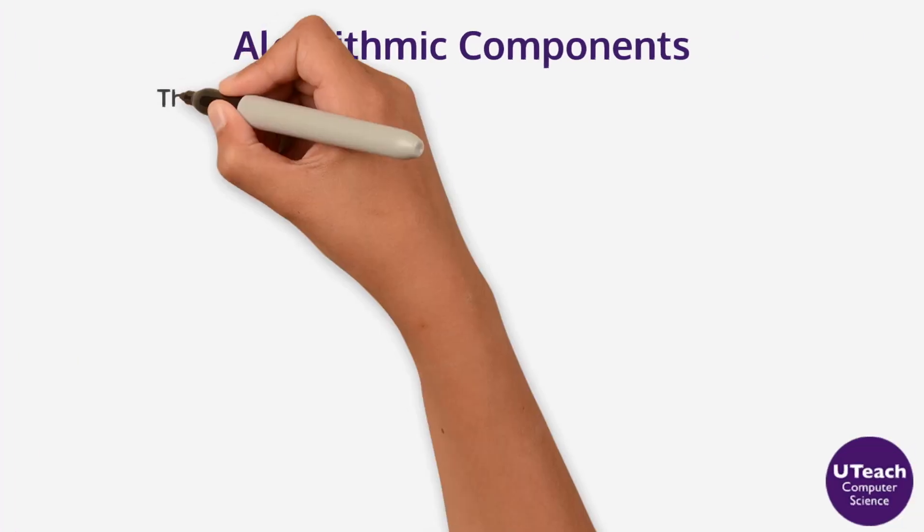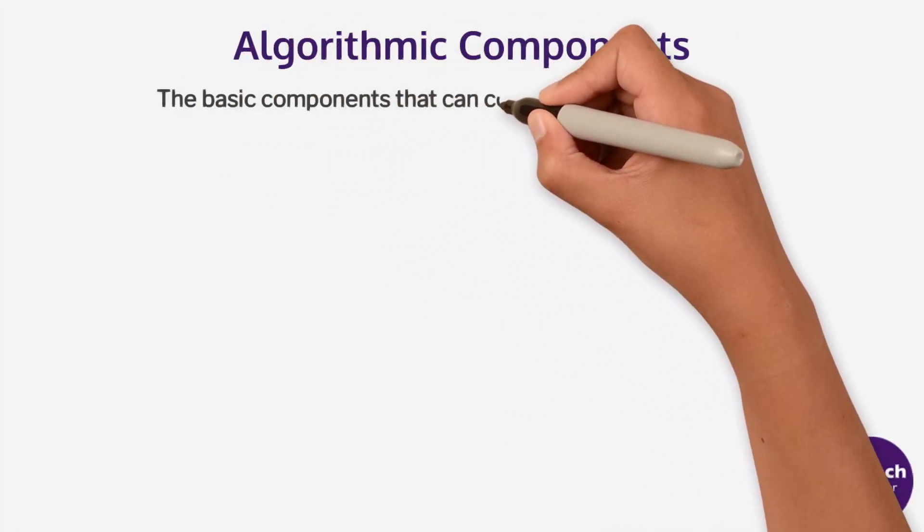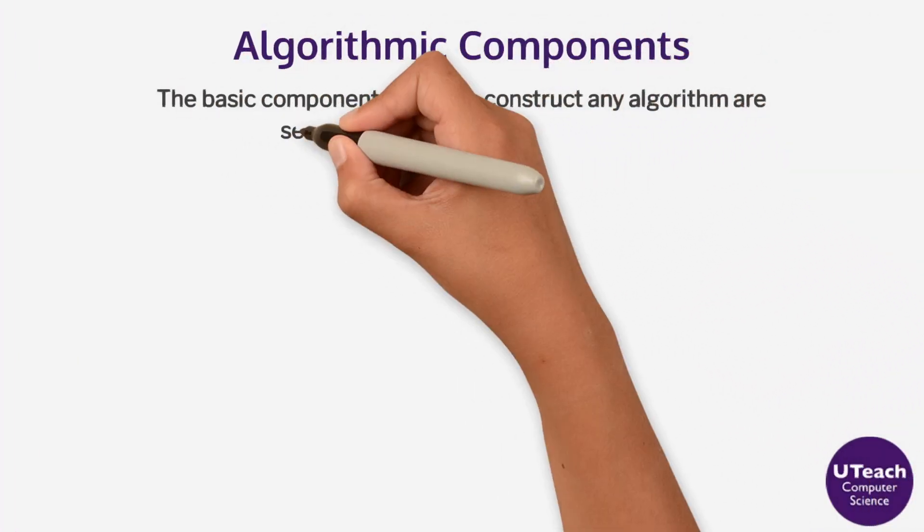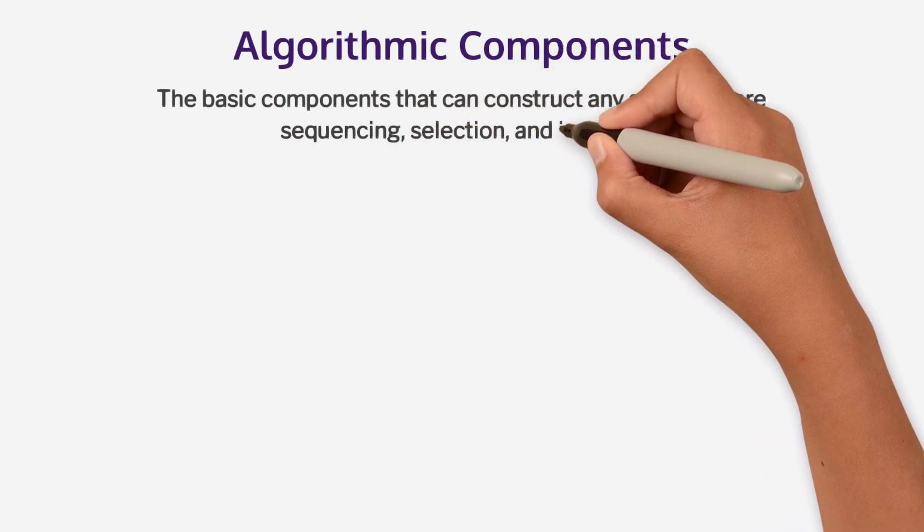Iteration. The basic components that can construct any algorithm are sequencing, selection, and iteration.